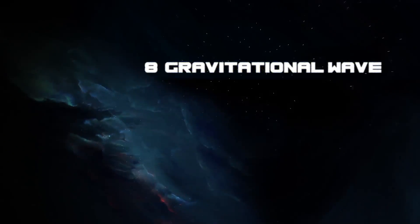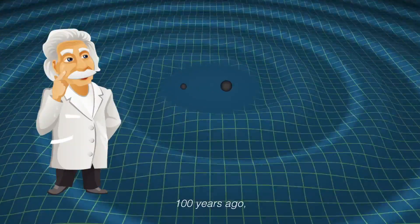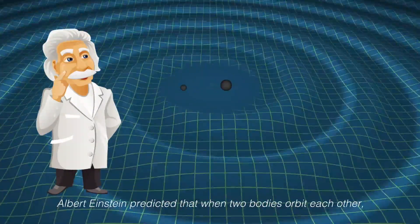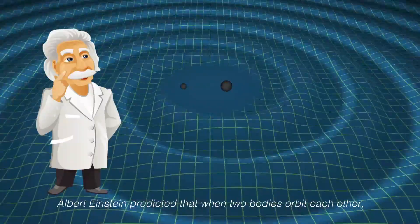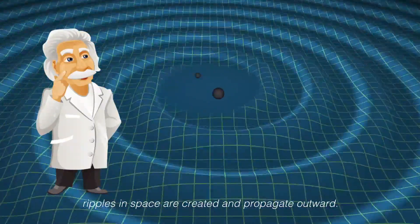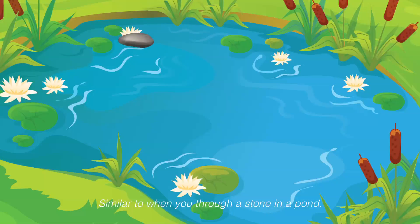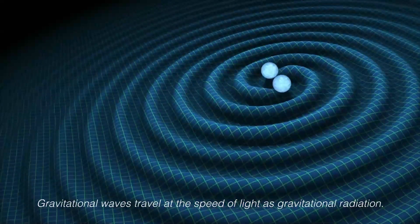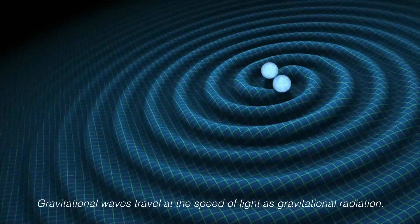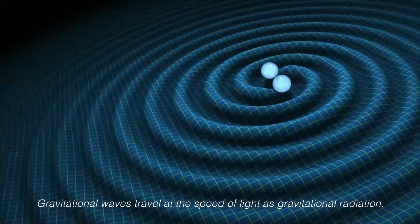Number 8: Gravitational Waves. 100 years ago, Albert Einstein predicted that when two bodies orbit each other, ripples in space are created and propagate outward. Similar to when you throw a stone in a pond, gravitational waves travel at the speed of light as gravitational radiation.